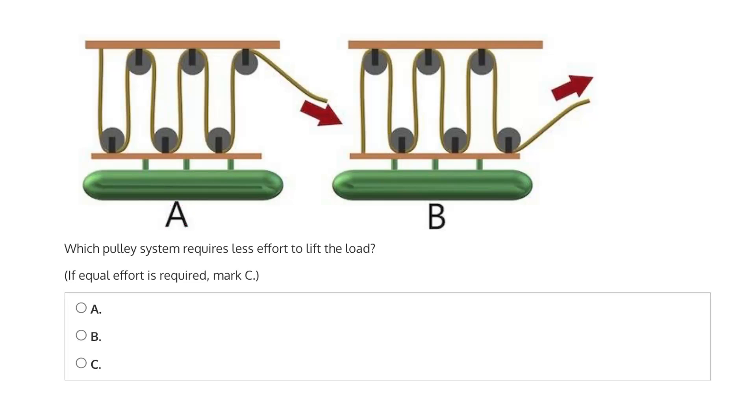So, starting by taking a look at A, A has 1, 2, 3, 4, 5, 6—6 ropes that are involved in lifting the load. This 7th rope is not included, because the tension is acting downwards, which means it is not involved in helping lift the load.